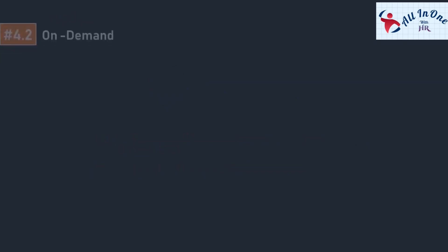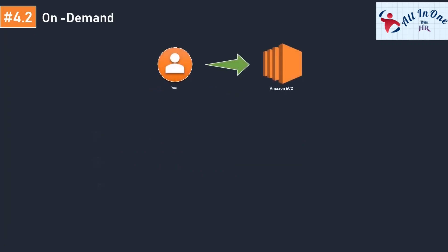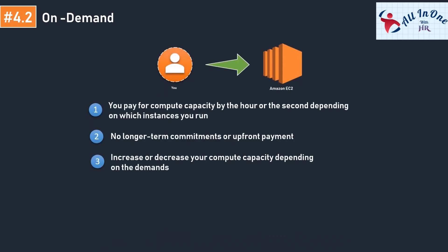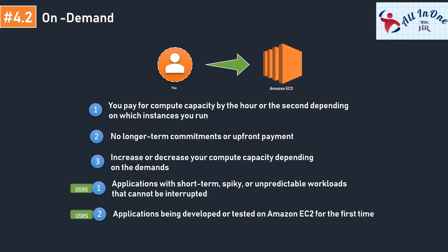The next pricing model is the on-demand instance. An on-demand instance is one you use on demand — you have full control over its lifecycle. You decide when to launch, stop, hibernate, start, reboot, or terminate it. You pay only for the hours that your on-demand instance is in the running state. There is no long-term commitment required. On-demand instances are typical for application testing, web service testing, or initial product deployment to evaluate traffic.